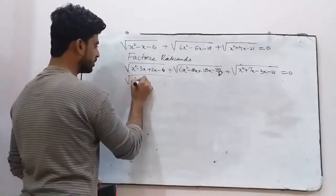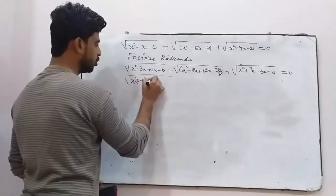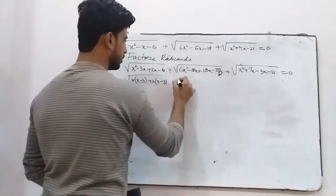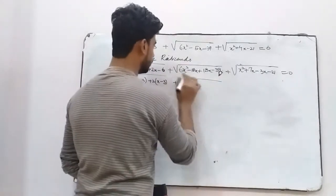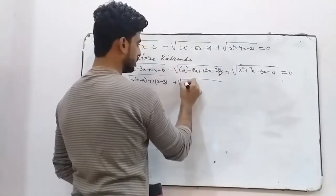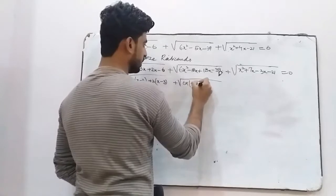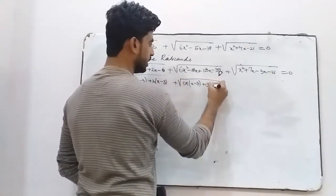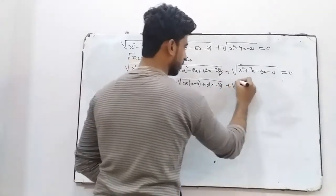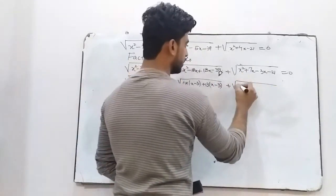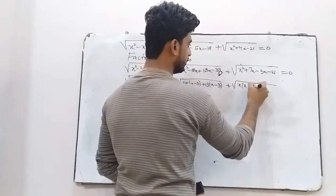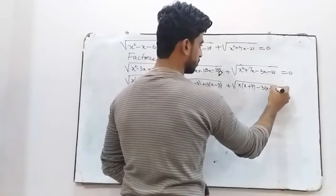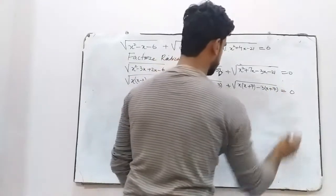Taking factors: x is common, giving x minus 3; positive 2 is common factor of x minus 3. In the next radical, 6x is common, leaving x minus 3. Positive 13 is the common factor, leaving x minus 3. Then x is common giving x plus 7, and negative 3 is common, so x plus 7 equals 0.